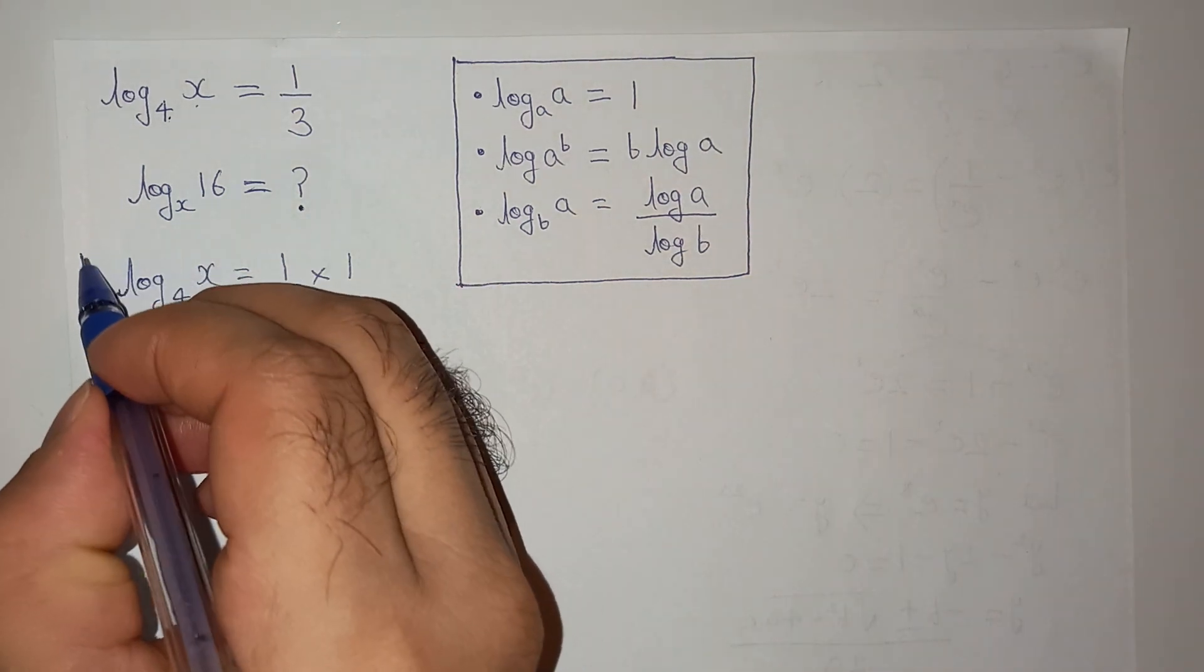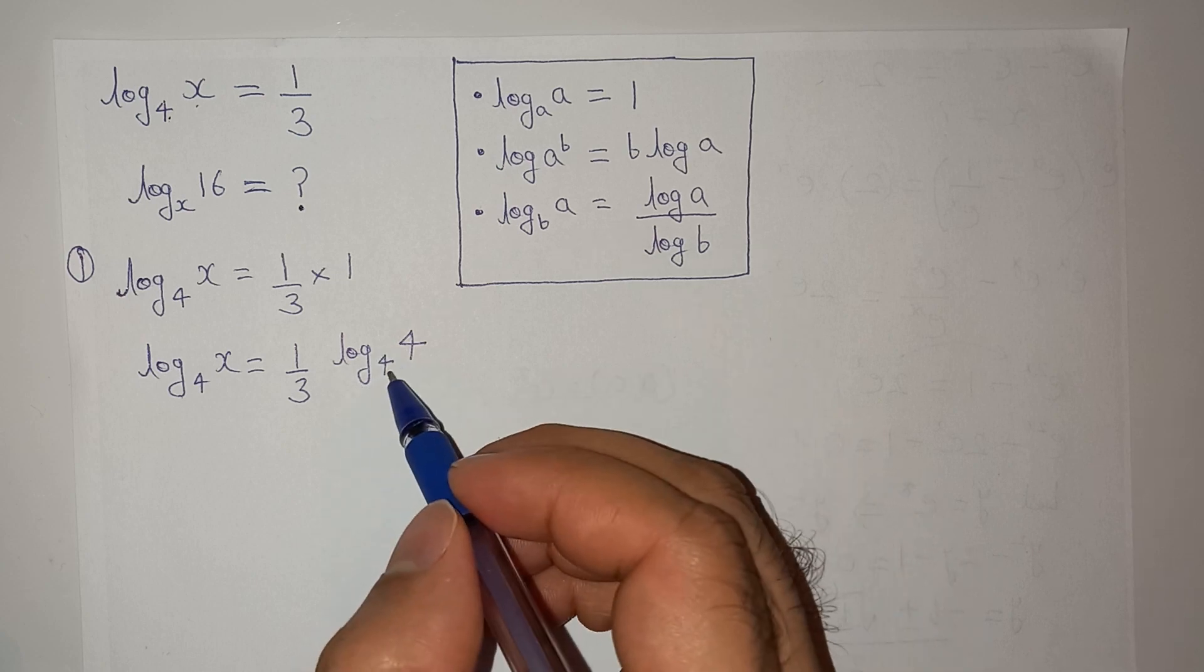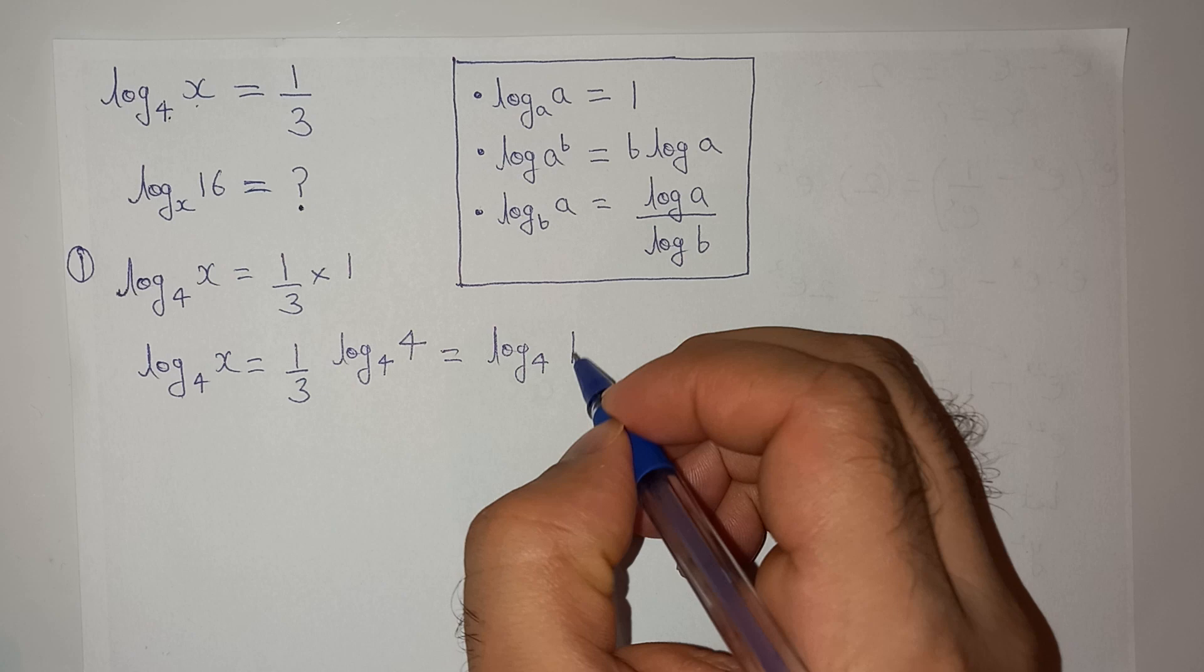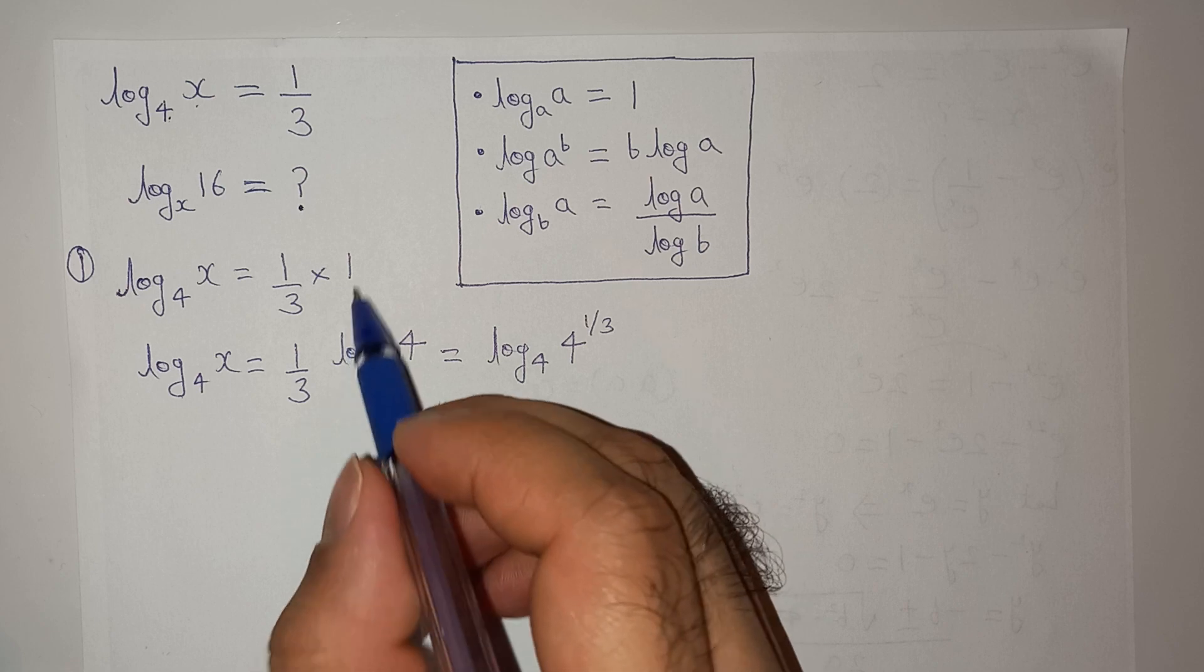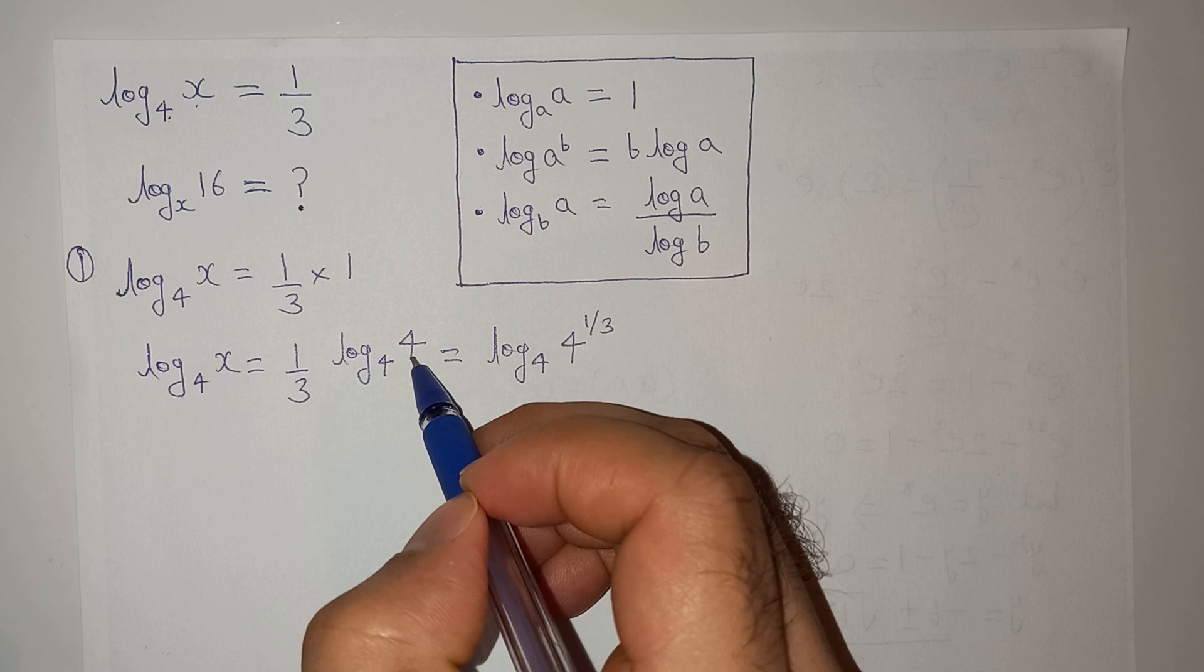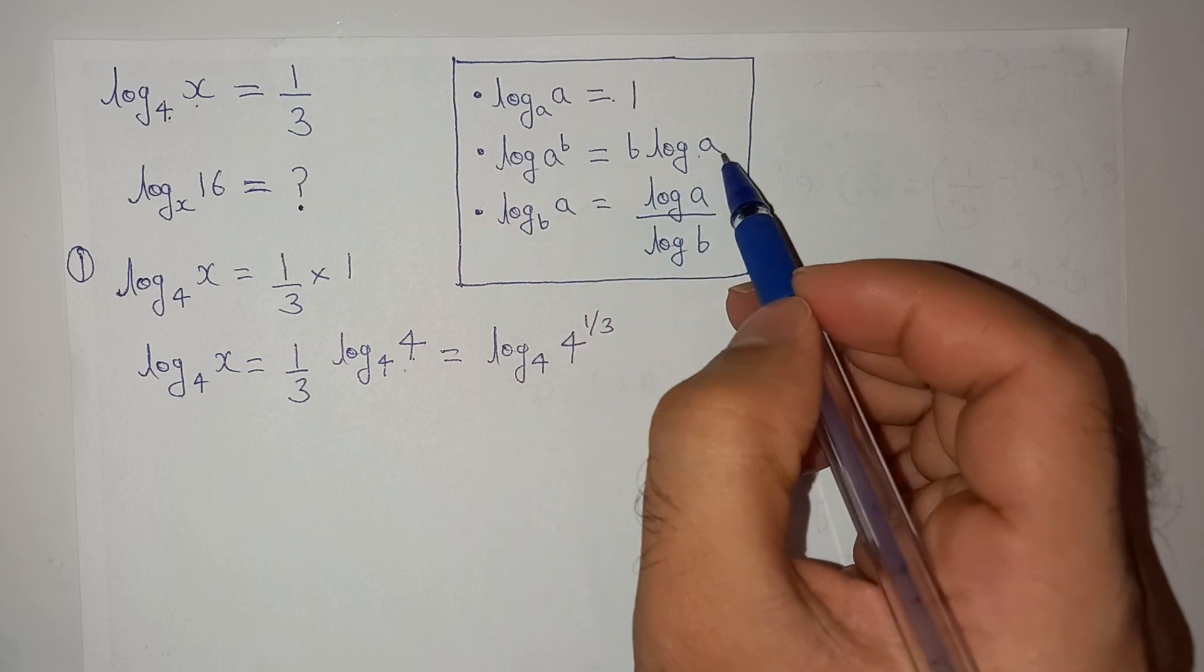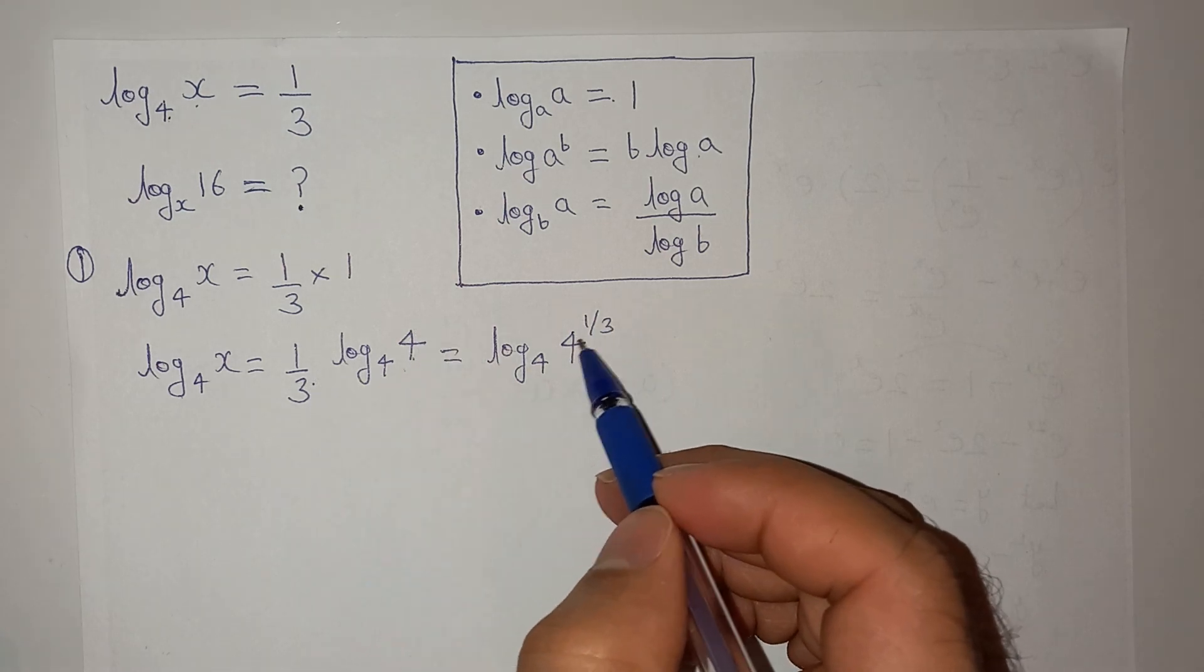So this is the first method, the shortcut method. This will give us log₄(4^(1/3)). I have used two exponential rules: first, log₄4 when the base is 4 and the number is also 4, the value will be 1. Another formula is log(a^b) = b·log(a). So this 1/3 is going to be an exponent of this number.